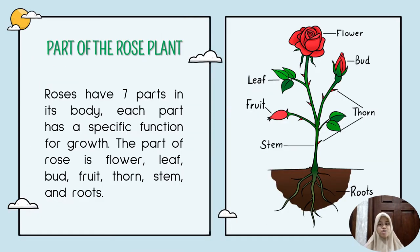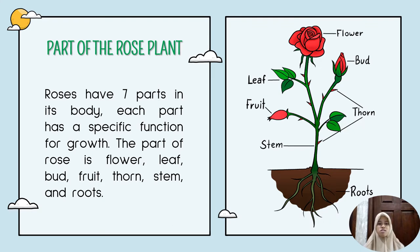The next description is about the parts of roses. Roses have seven parts in their body, and each part has a specific function for growth. The parts of a rose are: flower, leaf, bud, fruit, thorn, stem, and root.